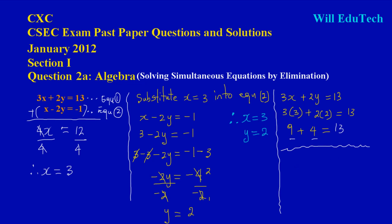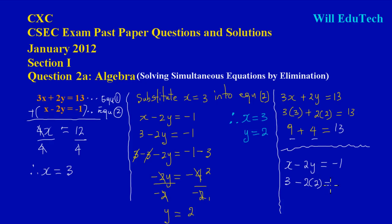But please don't stop there — it must also work for equation two. In equation two, x minus 2y equals negative 1. Substituting x equals 3 and y equals 2: 3 minus 2 times 2 gives 3 minus 4, which equals negative 1. It works for equation two as well.